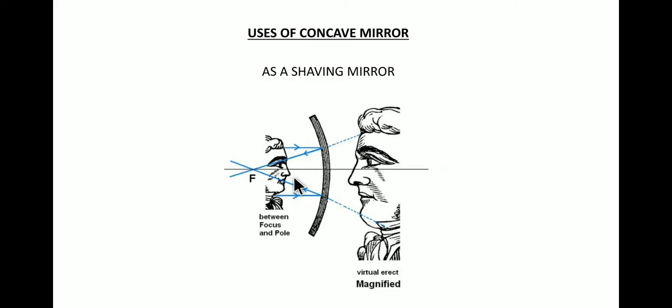If this focal length is very short then the face won't be within the focus and the pole. So if the focal length, this length between the pole and the focus, if this length is longer, then it would be easy for the face to be between this point focus and the pole and thus the image can be of bigger size.